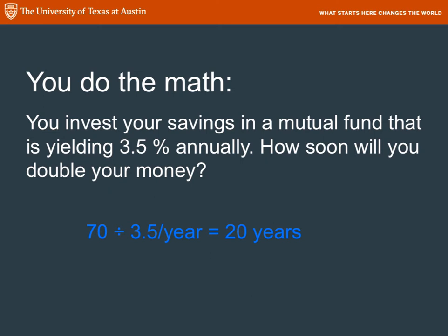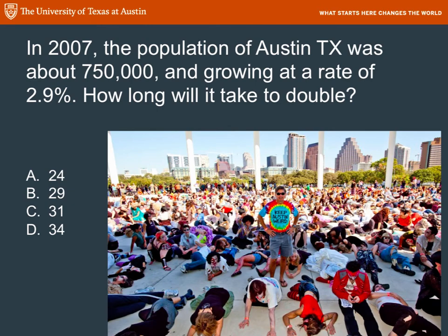That sounds like a pretty great investment if you happen to be 18. Maybe you should start investing in a mutual fund — it'll be doubled by the time you're 38, and doubled again four times by the time you're 58. Here's another one: in 2007 the population of Austin, Texas was about 750,000 and growing at a rate of 2.9%. How long will it take Austin to double in size? 24 years.